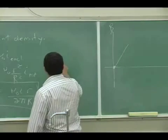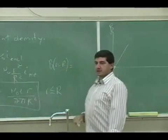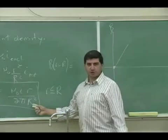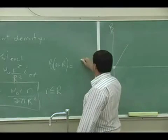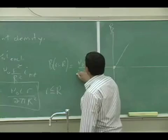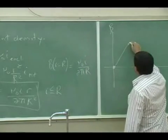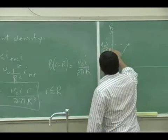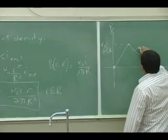When you put that here, you should get big R cancels that. You should get mu zero i over two pi R. So that's the biggest, mu zero i over two pi R. And then after that, it decreases as one over R.